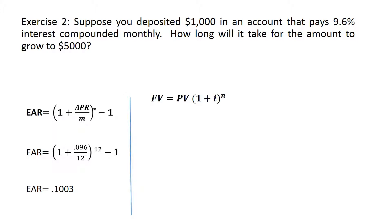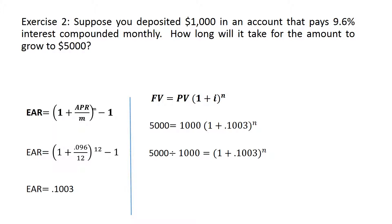Now I use the regular future value equation. The future value is 5,000, the present value deposited today is 1,000, and the interest rate is the effective annual rate raised to the power of n — but n is the missing value because the question asks how long will it take. Before finding n, I simplify the equation by dividing both sides by 1,000, leaving me with 5 on one side.